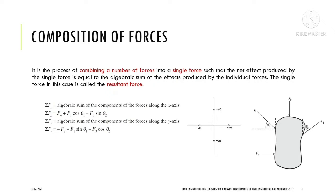To compose forces, resolve all forces into their components. For horizontal resolution: forces acting to the right are positive and forces to the left are negative. For vertical: upward is positive and downward is negative. F2 acting downward is taken as negative. F4 acting to the right is positive, written as +F4. F1 is inclined, so it must be resolved using cos theta to get its horizontal component.